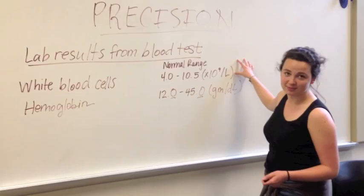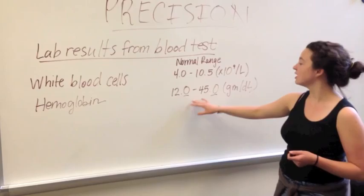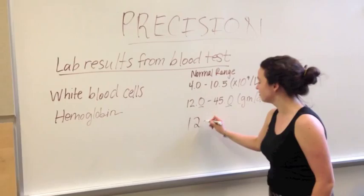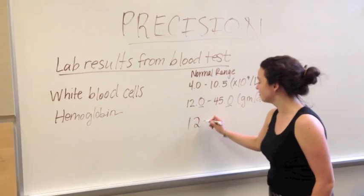The normal range for white blood cells we can say is 4.0 to 10.5 and that's in terms of liters. And then we have, for hemoglobin, 12.0 to 45.0. We can see that the precision here is more accurate than saying the normal range would be from 12 to 45. Why is it more accurate?